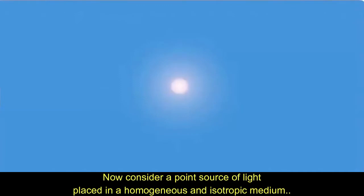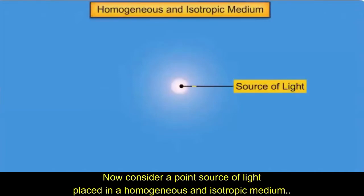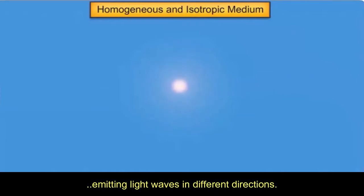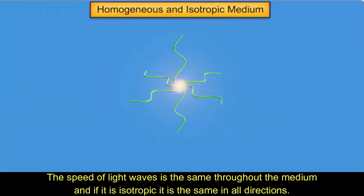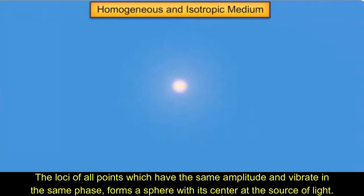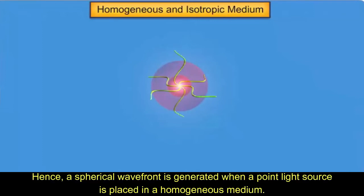Now consider a point source of light placed in a homogeneous and isotropic medium, emitting light waves in different directions. If the medium is homogeneous, the speed of light waves is the same throughout the medium, and if it is isotropic, it is the same in all directions. The loci of all points which have the same amplitude and vibrate in the same phase forms a sphere with its center at the source of light. Hence, a spherical wavefront is generated when a point-light source is placed in a homogeneous medium.